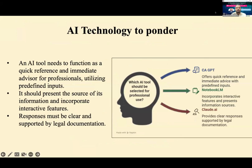I came across a tool called CA GPT. While reading about AI tools, I found there are hallucination risks. I tried both ChatGPT and CA GPT and found that CA GPT, being created by the Institute, gave me the most appropriate results. I then used NotebookLM for defining prompts and summarizing data. I also tried LLaMA Coder but it produced hallucinated code, so I switched to Claude AI, which generated accurate code.